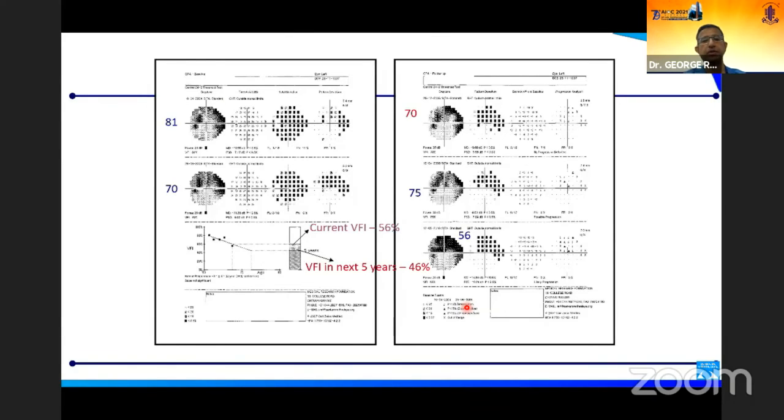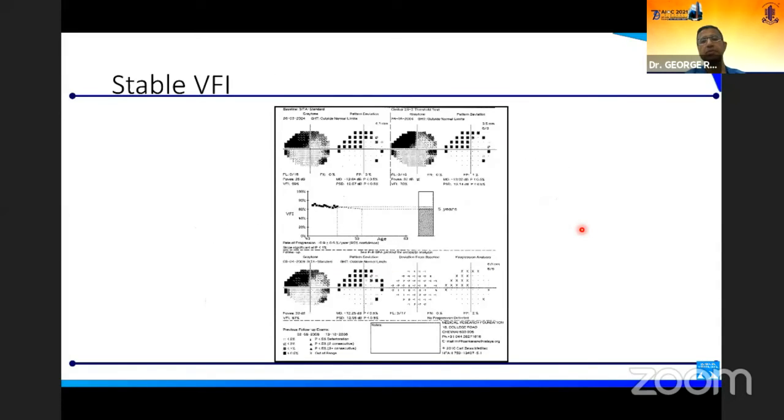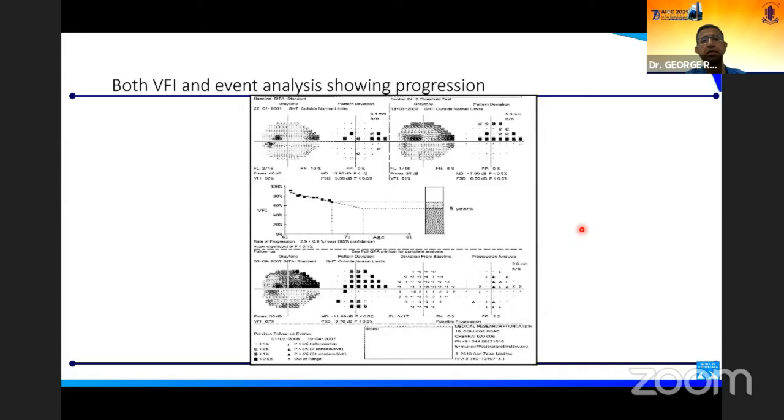When you put this entire information together, this is what you would see. You would see a VFI bar there and these are the VFI numbers on the side showing how it's getting worse. You can see on the event analysis too, things are getting worse. But what is typically given is a single printout like this. Here you can see that the VFI is not showing much change over time, neither are the event analyses. Here both the visual field index trend and event analysis are statistically significant. Here also you have multiple points getting worse.